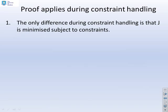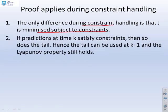Now this proof also applies during constraint handling. The only difference during constraint handling is that J is minimized subject to constraints. But you can still ride on the tail, and therefore the same arguments follow automatically. If predictions at time k satisfy constraints, then so does the tail. And hence the tail can still be used at k plus 1, and therefore the Lyapunov property must still hold.